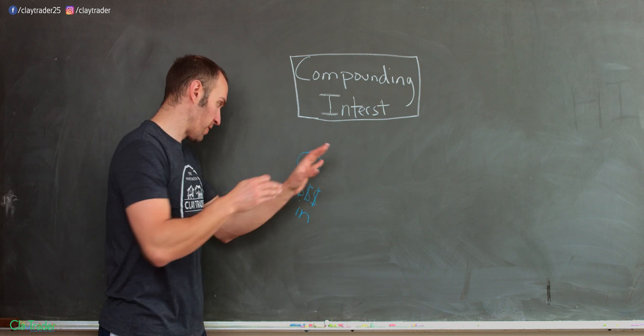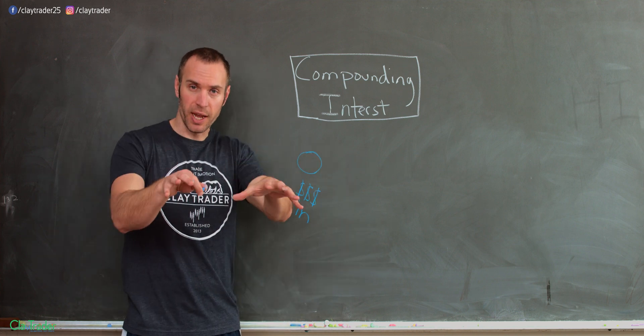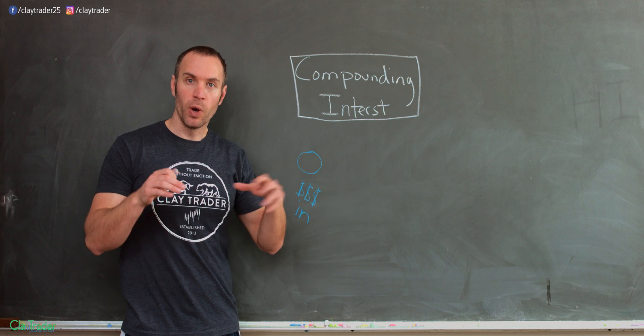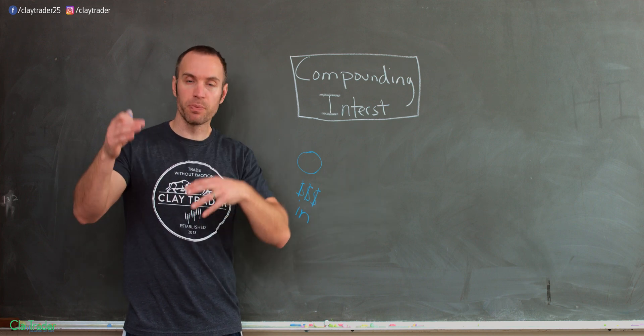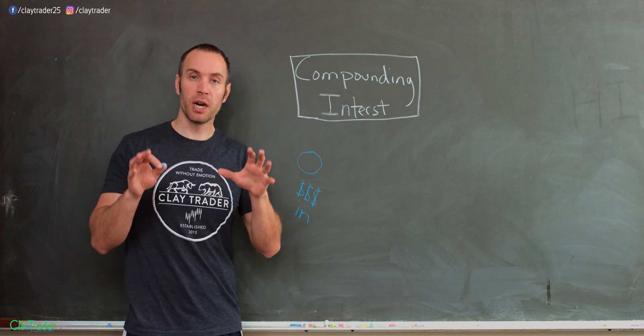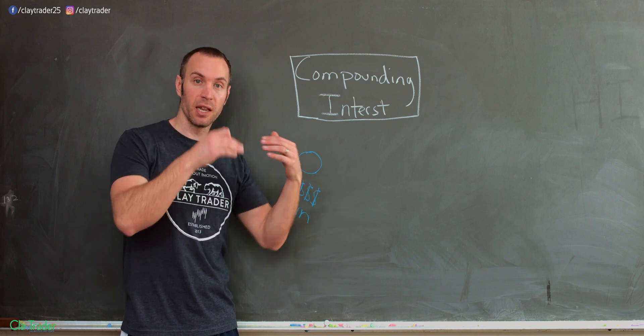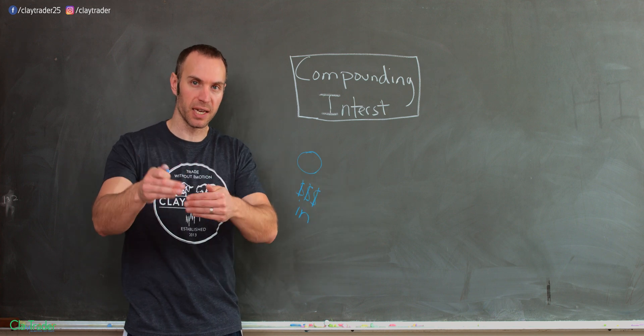So the more money you put into, in this example, the stock market, the bigger that shape is going to be. But let's just say that it's that size because that equates to the amount of money you put in. Now, when you do certain things, and there are multiple ways to do it, but let's just say you want to put this money into the stock market, specifically into dividend paying stocks.